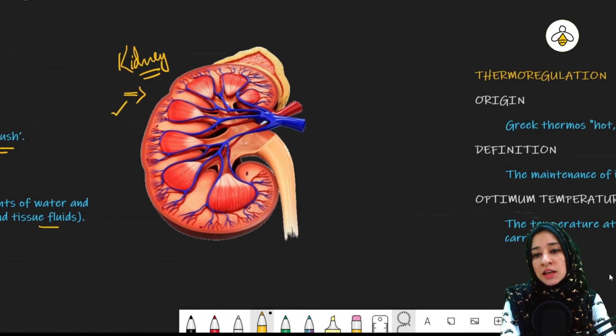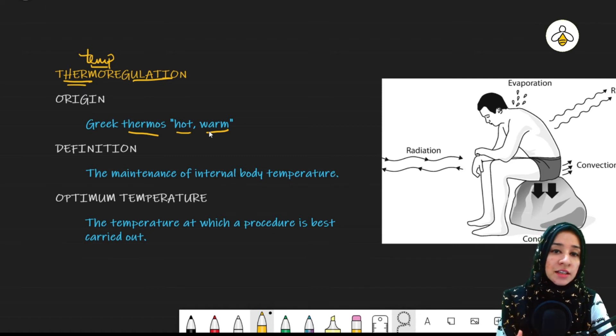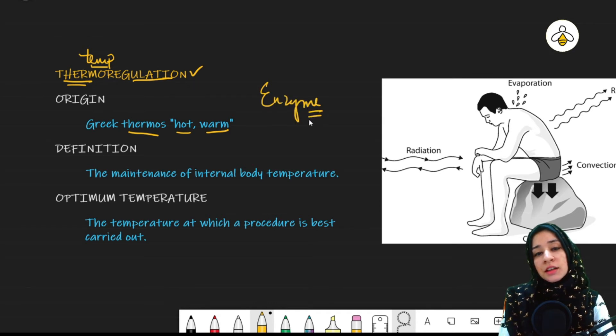The second process is the thermoregulation. Again the name is indicating, thermo related to temperature, regulation to maintain something. So basically the maintenance of the internal body condition. The word thermo is derived from the Greek word thermos meaning hot or warm, and maintaining the internal body temperature will come under thermoregulation. We have already discussed internal body temperature. Why do we have to maintain the internal body temperature? It is important so that enzymes can work properly, enzymes can give their best. All the functions and reactions can properly occur in the body, and the body can properly perform all the functions. This is the reason that our body temperature needs to be maintained at about 37 degrees celsius.